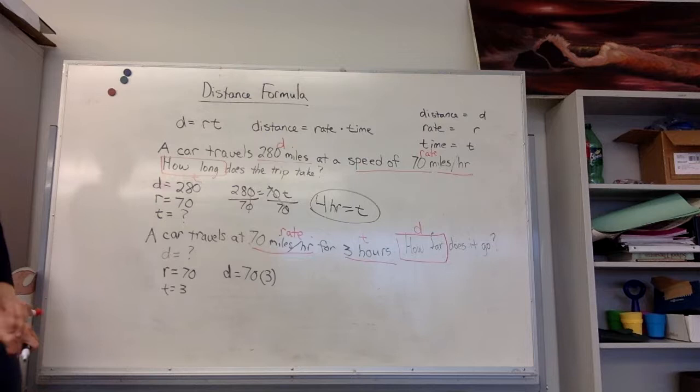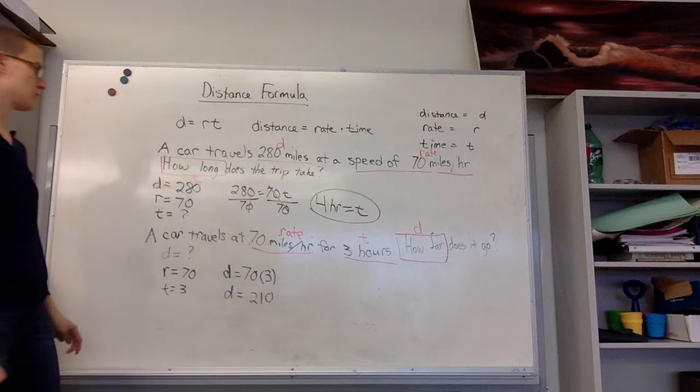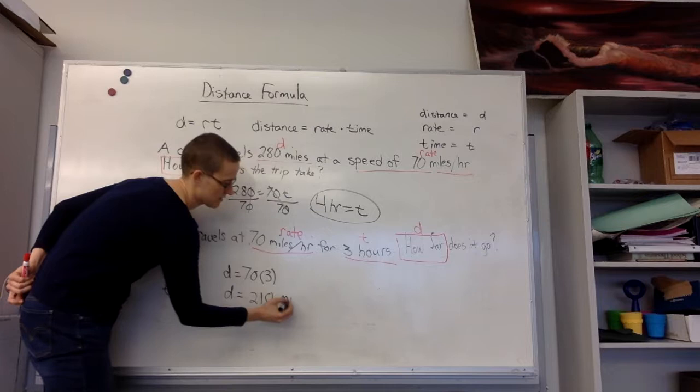To solve this, I simply need to multiply 70 times 3 to get 210. So my distance equals 210. To look for units, I look back to the problem. Looks like we're measuring in miles. That's a distance. So my answer is 210 miles.